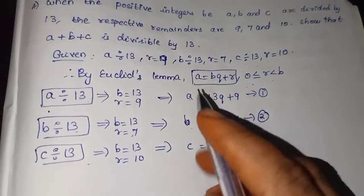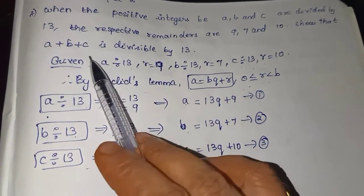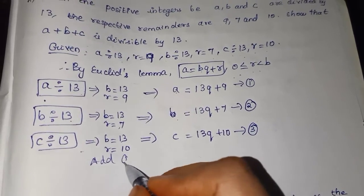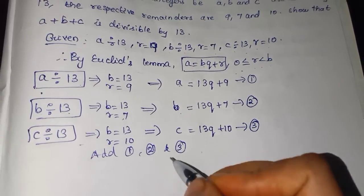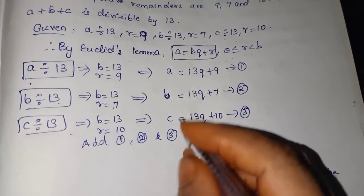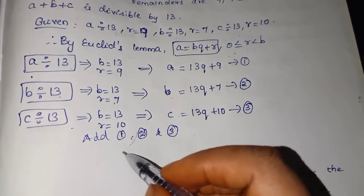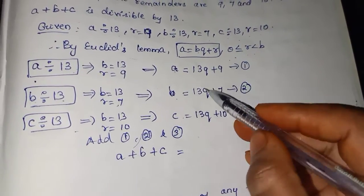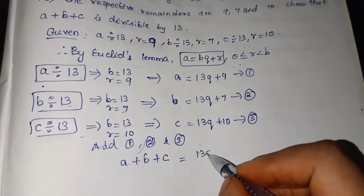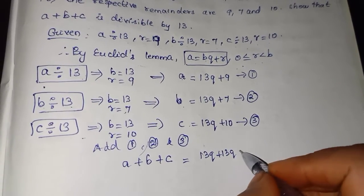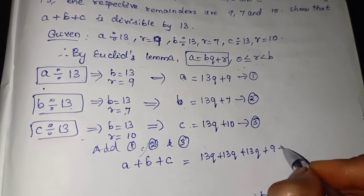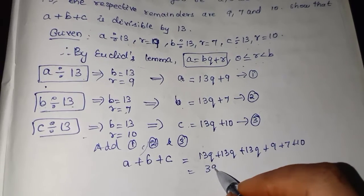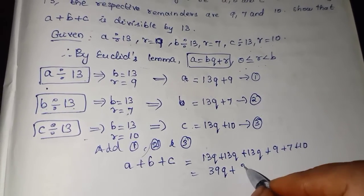We have to prove that A plus B plus C is divisible by 13, so we add equations 1, 2 and 3. Adding all the left-hand sides together: A plus B plus C equals 13Q plus 13Q plus 13Q plus 9 plus 7 plus 10. That gives us 39Q plus 26.